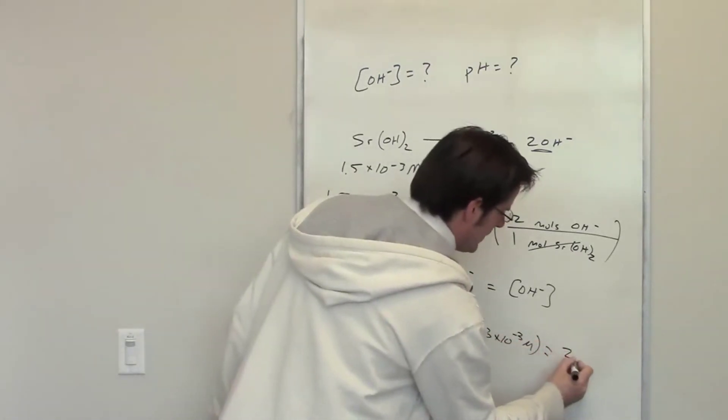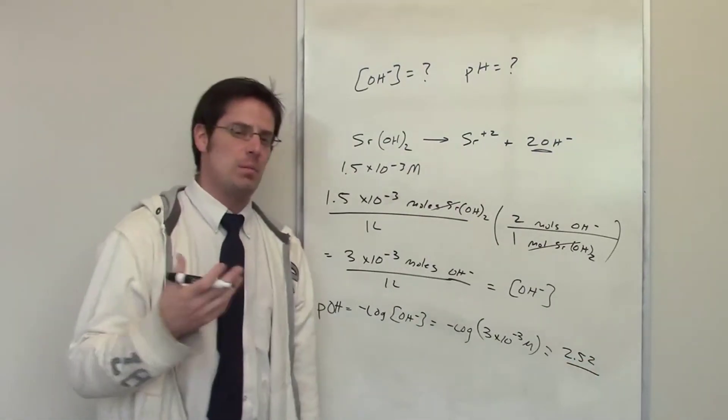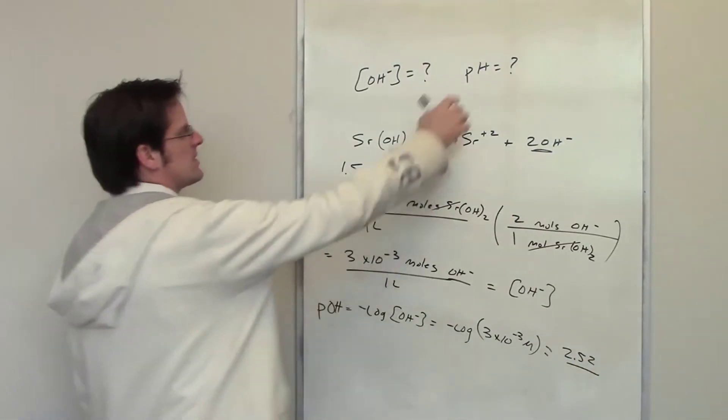I throw that into my calculator, pOH ends up equaling 2.52. Why in the world would I care about pOH? The reason is because it's asking me pH.